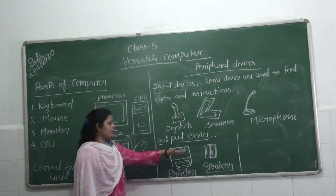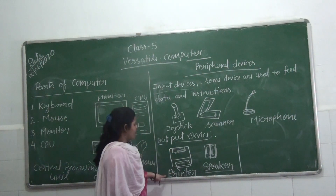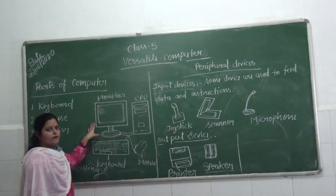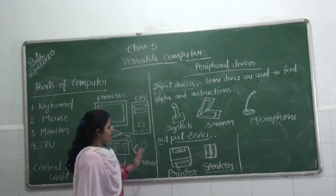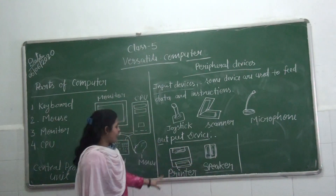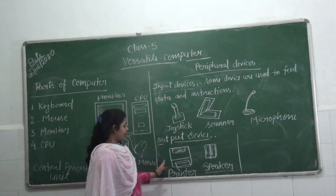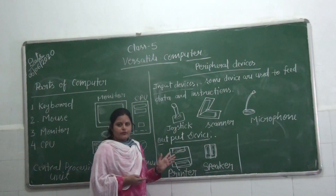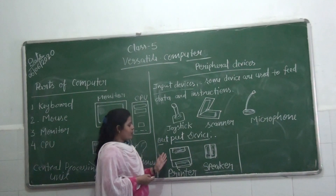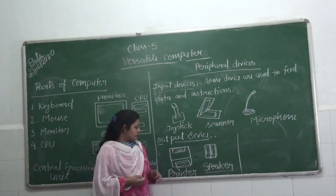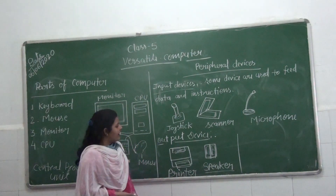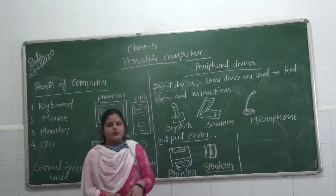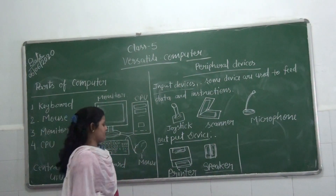Next are the output devices: printer, speaker, and monitor. Monitor is the main output device, while printer and speaker are peripheral output devices. The printer helps us get information on paper. The speaker outputs sound and voice.